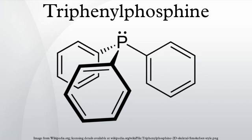Tetrakis(triphenylphosphine)palladium(0) is widely used to catalyze C-C coupling reactions in organic synthesis, such as the Heck reaction. Wilkinson's catalyst, RhCl(PPh3)3, is a square planar Rh(I) complex of historical significance used to catalyze the hydrogenation of alkenes.